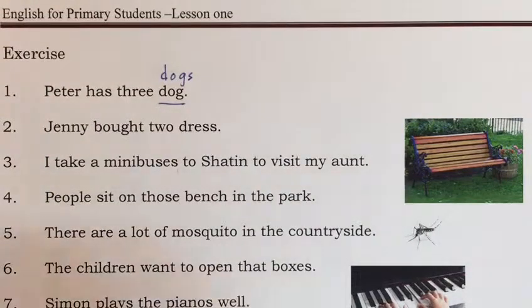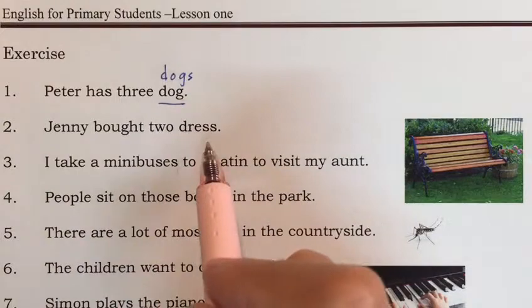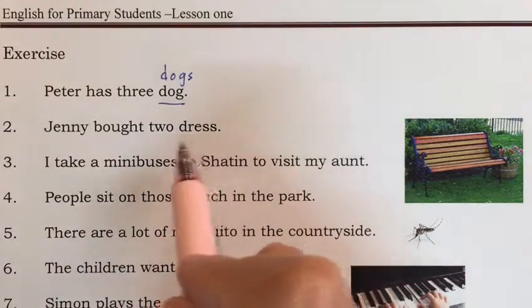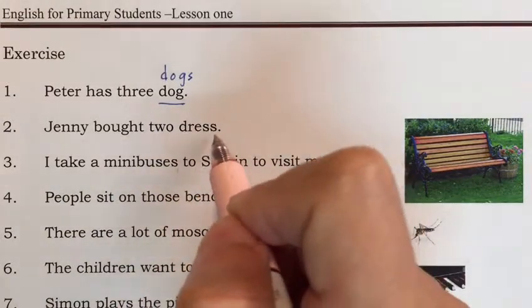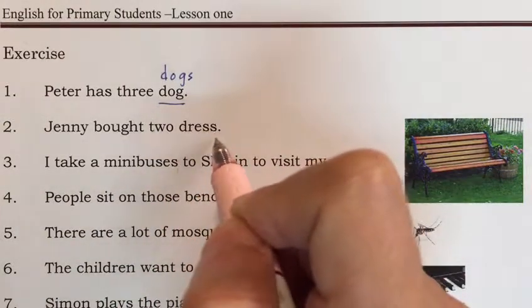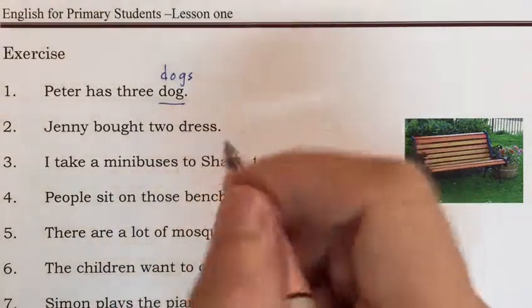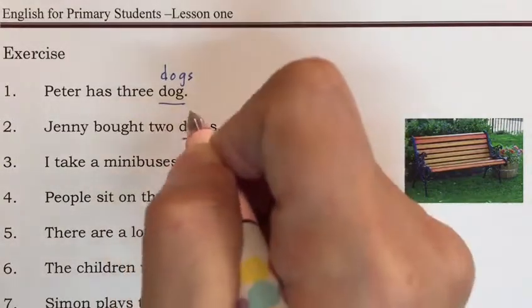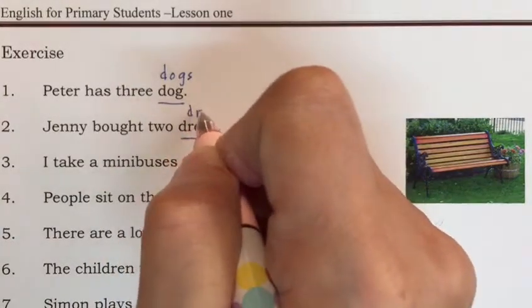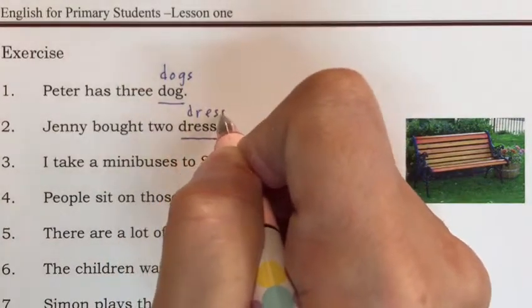Number two. Jenny bought two dresses. Two dresses — we'll add two S's. Two dresses. That's right.